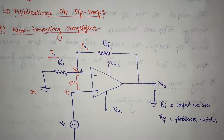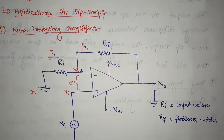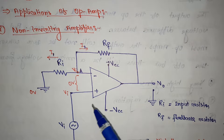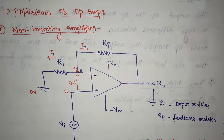Hello friends, today we are going to discuss the applications of the op-amp, that is also called the operational amplifier. First, we will discuss the non-inverting amplifier, and we will derive the formula for the gain, which is A equal to output voltage divided by input voltage.